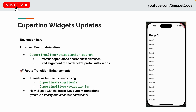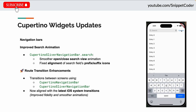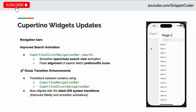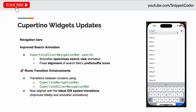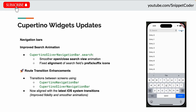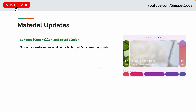The CupertinoSliverNavigationBar search received a major animation improvement when opening and closing. Prefix and suffix icons are now aligned correctly. Route transitions using Cupertino bars now match the latest iOS system transitions, ensuring better visual fidelity and smoother UX.